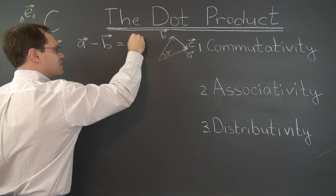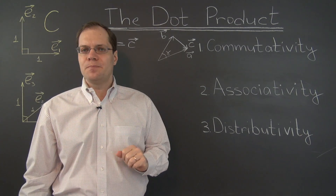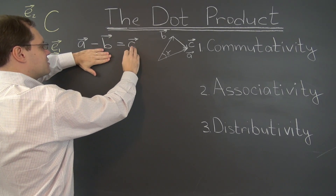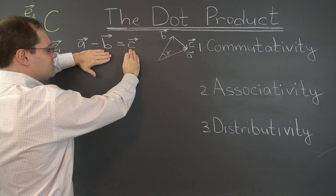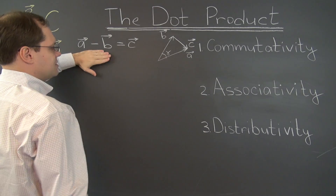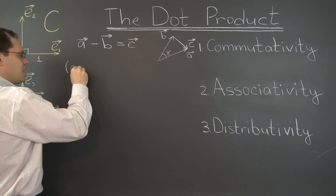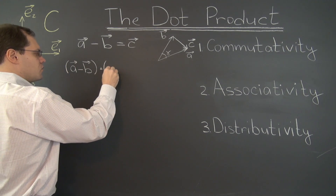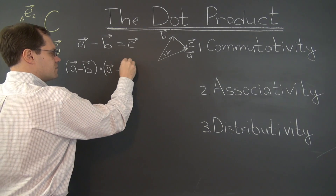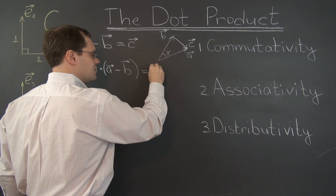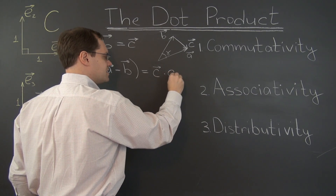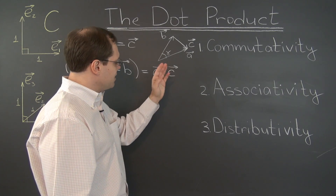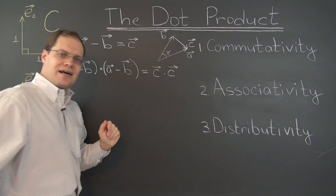We're off to a good start. What I'm going to do now is dot both sides of this equation with itself. Because this vector equals this vector, we must have that this vector dotted with itself equals this vector dotted with itself. So: a minus b dotted with a minus b equals c dotted with c. On the right-hand side, we'll have the length of c squared, denoted c without the arrow squared.